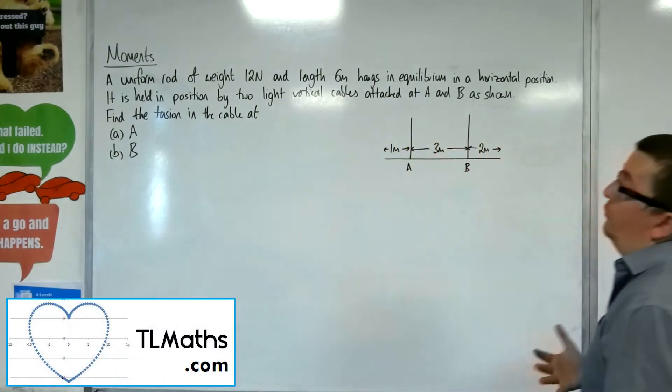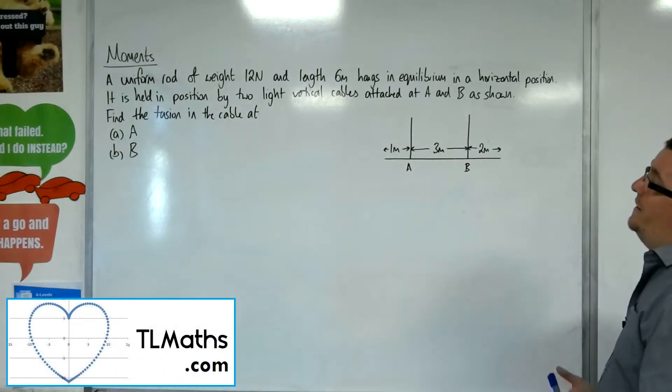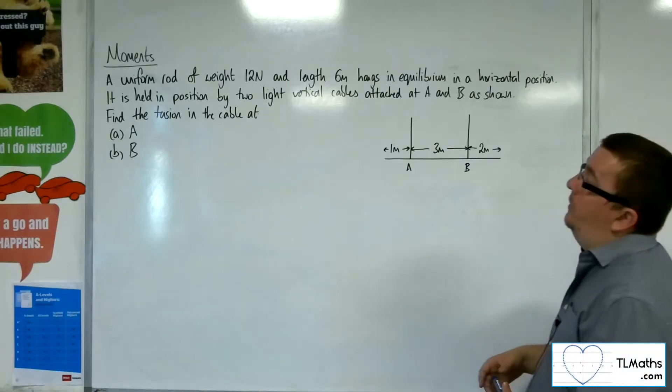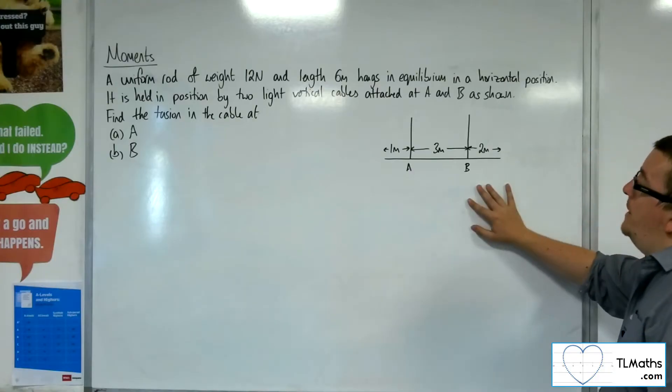In this problem, a uniform rod of weight 12 newtons and length 6 meters hangs in equilibrium in a horizontal position. It is held in position by two light vertical cables attached at A and B, as shown.